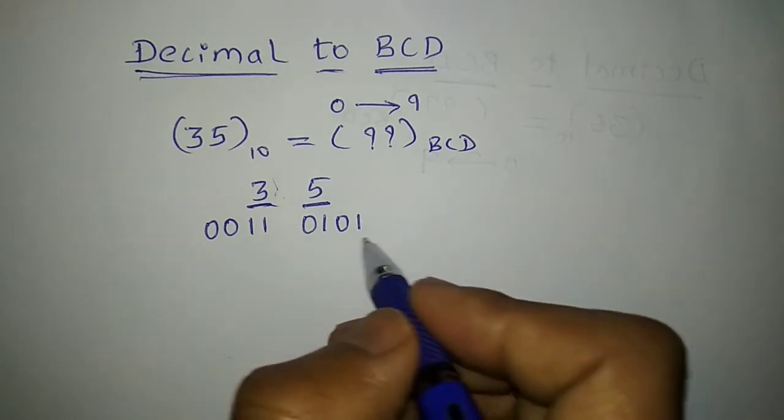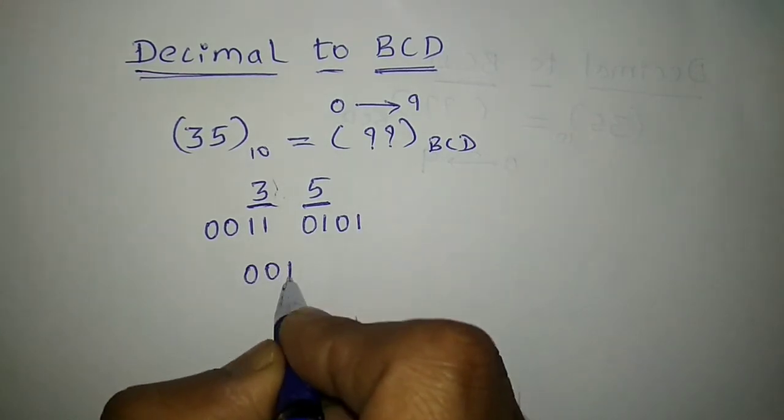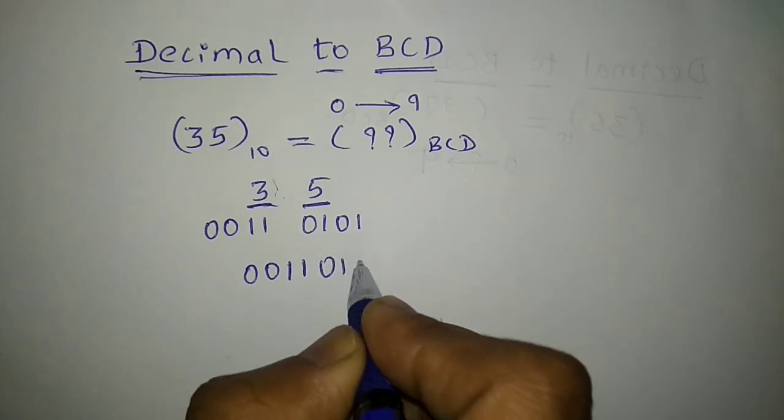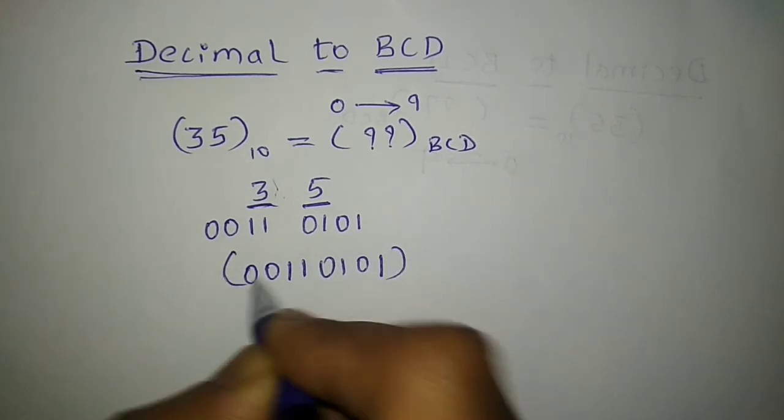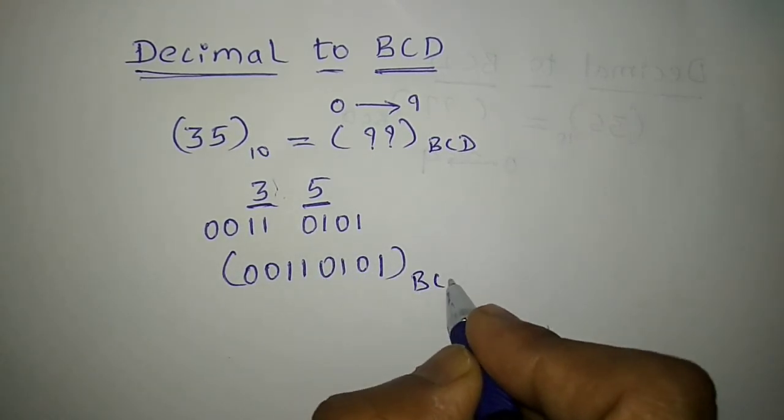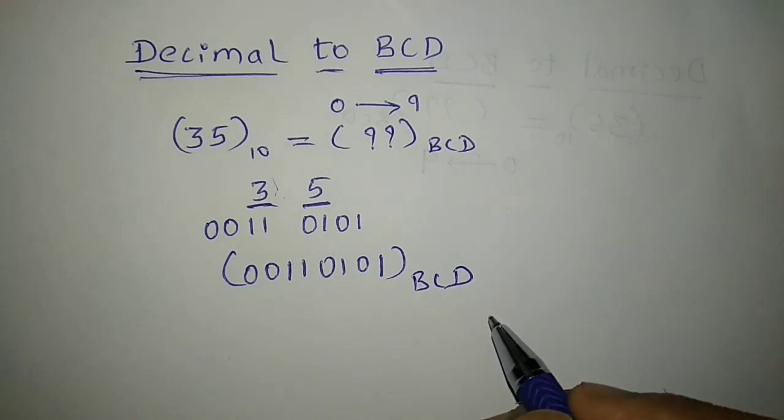So I just combine them. So how do I combine? It is 0011 0101. So this is the equivalent of 35 in BCD.